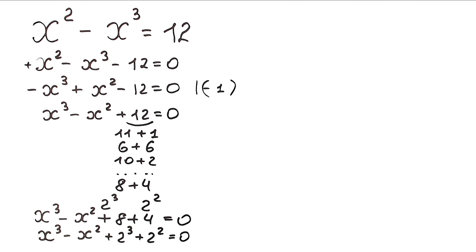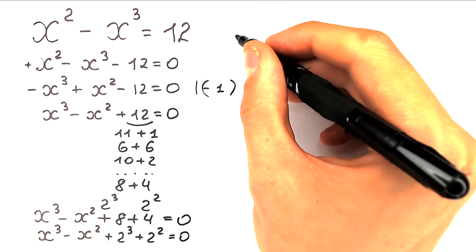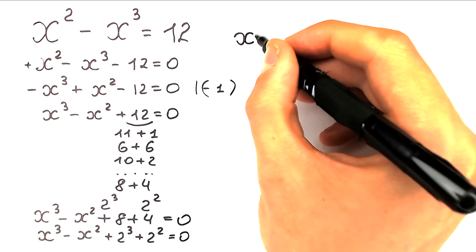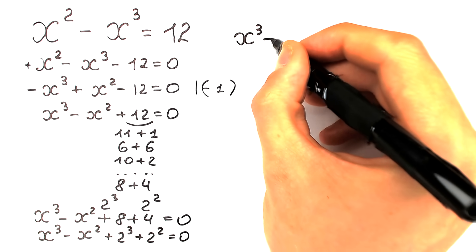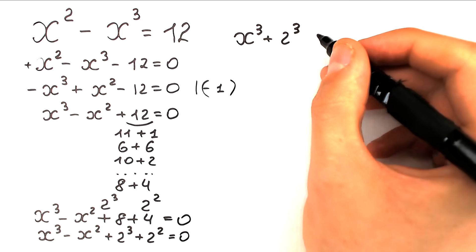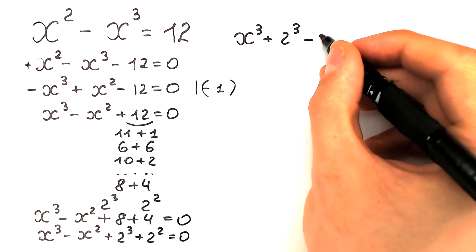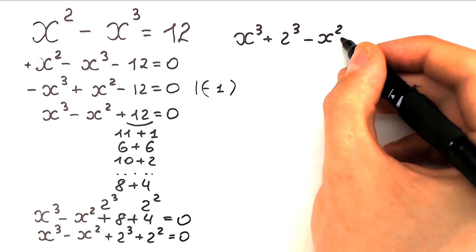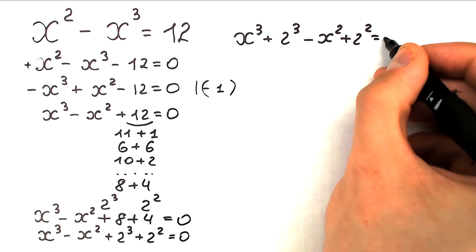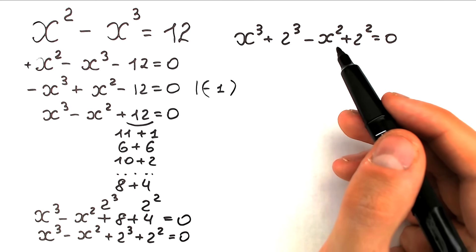What are we going to do next? Let's group our cubes together and our squares together. So we have x³ plus 2³ and then minus x² plus 2². We just group the expressions with cubes and with squares.